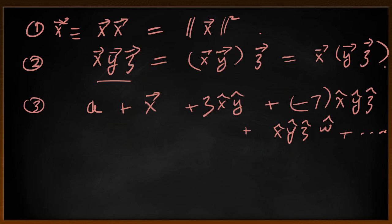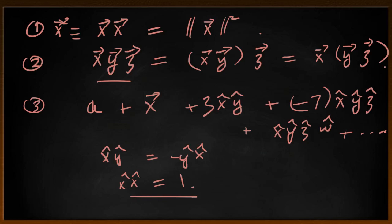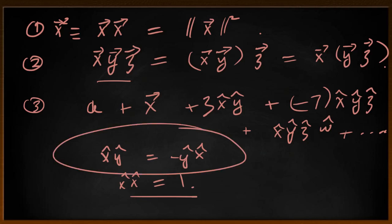Now let's look at some examples of how these axioms play out, and specifically how, from these, we end up with the rule that perpendicular vectors anti-commute and that a unit vector multiplied by itself is one. This one is probably fairly obvious — it follows directly from axiom one: the product of a vector with itself is the squared length of that vector, and the squared length of any unit vector is one.